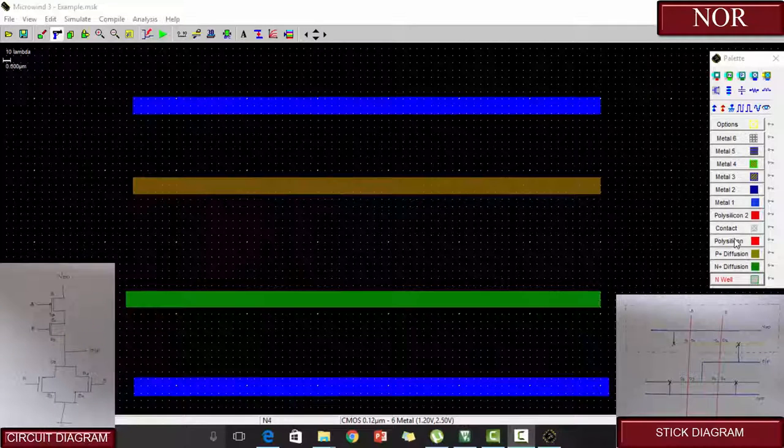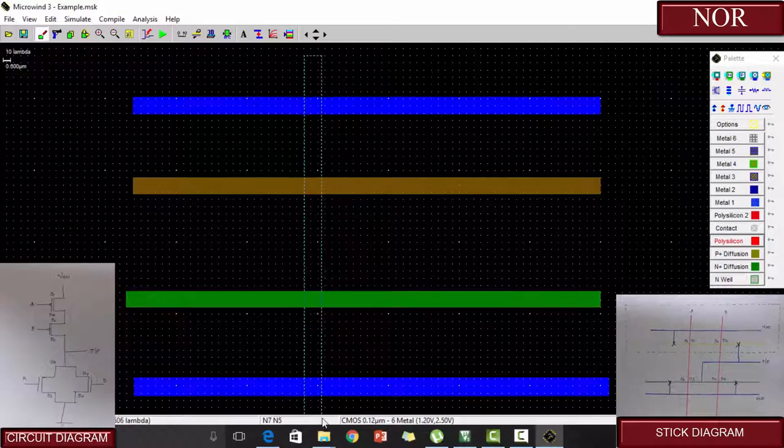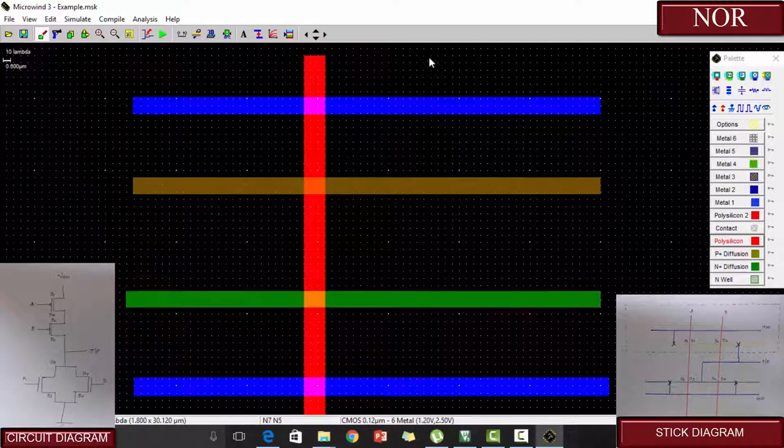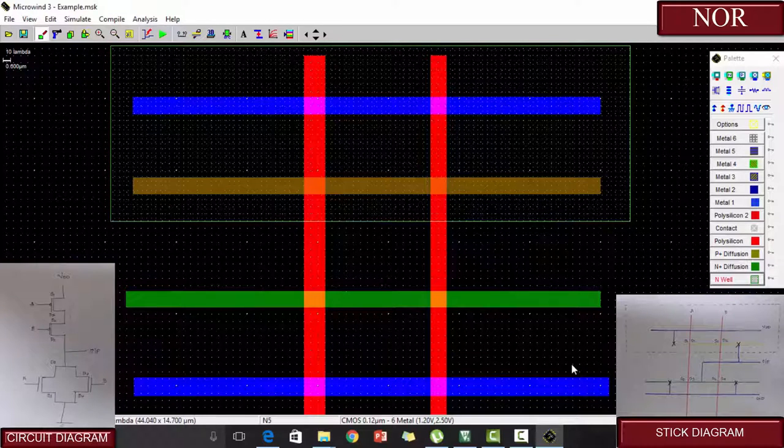So in order to give the inputs, the polysilicon is selected from the palette. Since we are going to give two inputs, we give two polysilicons. We are going to draw N-well. Yes, the N-well is now constructed.